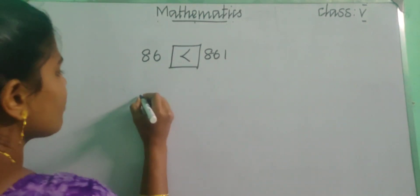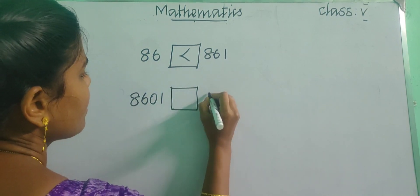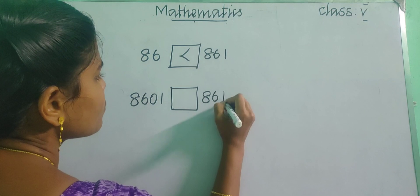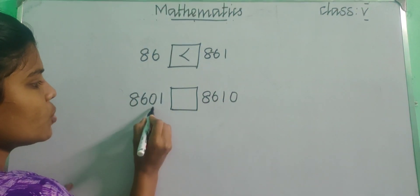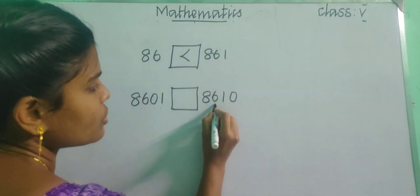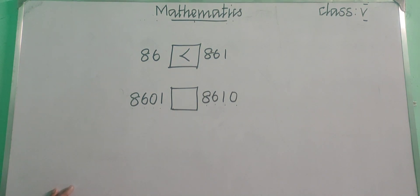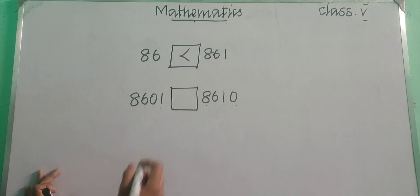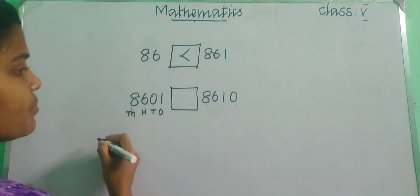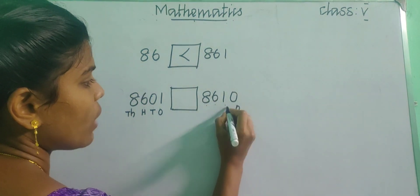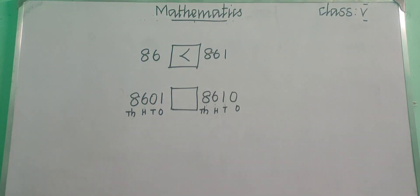If you are having 8601 and 8610, so which one is greater? First count the digits: 4 digits and here also 4 digits, so both the numbers are 4-digit numbers. So what we need to do? We need to write the place value — it is 1s, 10s, 100s, 1000s. And here also 1s, 10s, 100s and 1000s. So how will you compare these two numbers?